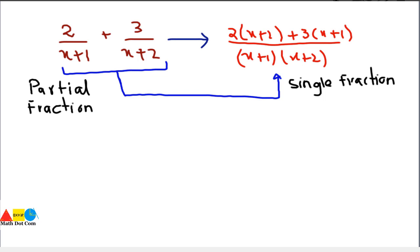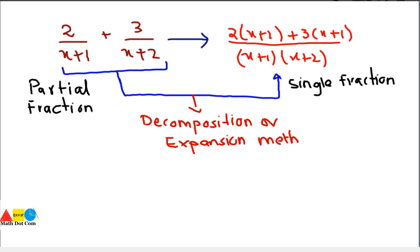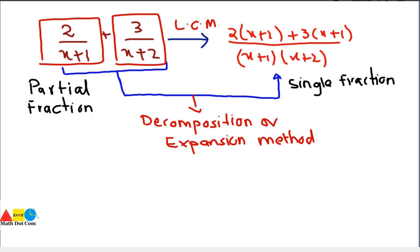We have to use a decomposition or expansion method in order to get the individual or partial fractions, which are simpler fractions compared to the single resultant fraction made after adding. This was the simple method in which we took the LCM. A method was devised for decomposition that is called partial fraction decomposition or partial fraction expansion, in order to get these partial fractions. This is the concept of partial fraction decomposition and expansion. In our next lecture, we will see how you can decompose a single or resultant fraction into its partial fractions. Thank you.